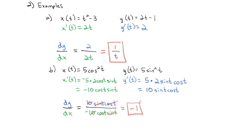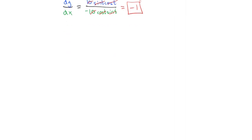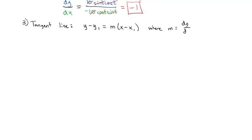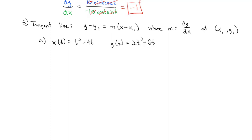When we were back in Calculus 1, we didn't just want to find the derivatives — the derivative was the slope of the tangent line, but we actually wanted to find that tangent line through a given point. The tangent line formula is y - y₁ = m(x - x₁), where m = dy/dx at the point (x₁, y₁). So if we have x(t) = t² - 4t and y(t) = 2t³ - 6t, and we want the equation of the tangent line at t = 5, we can build this in much the same way.